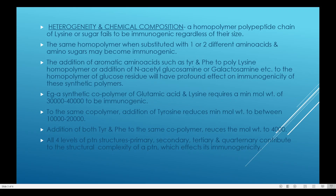Sugars fail to be immunogenic regardless of their size. A homopolymer — a polymer made up of similar repeating units — also fails immunogenicity. For example, a homopolymer polypeptide chain of lysine, which is a long chain made up of a number of lysine residues, fails to be immunogenic even though it is large in size. So large size alone does not guarantee immunogenicity.